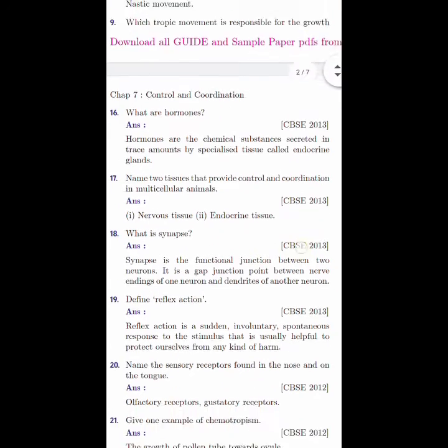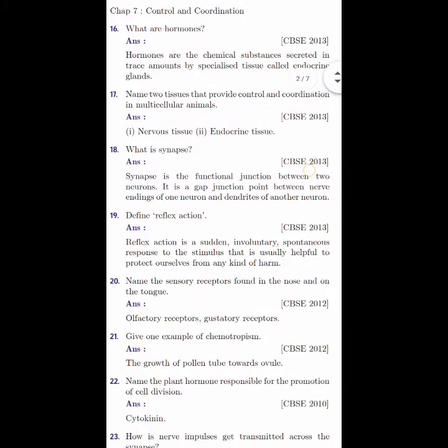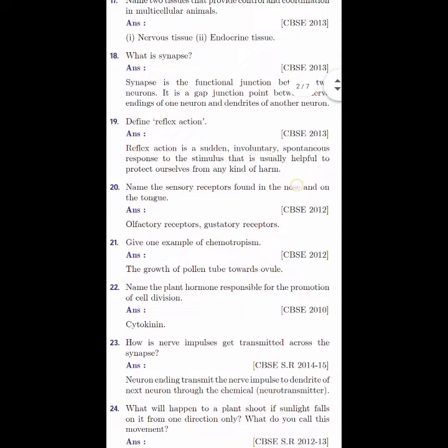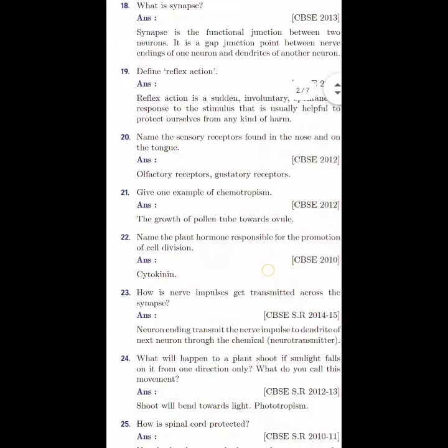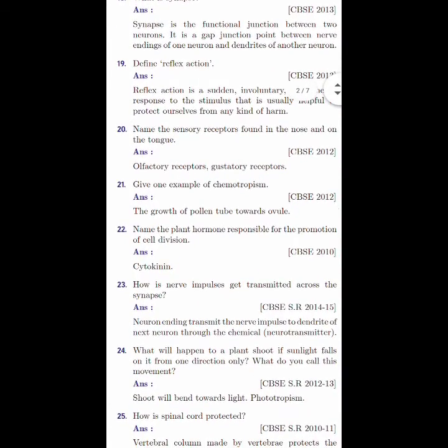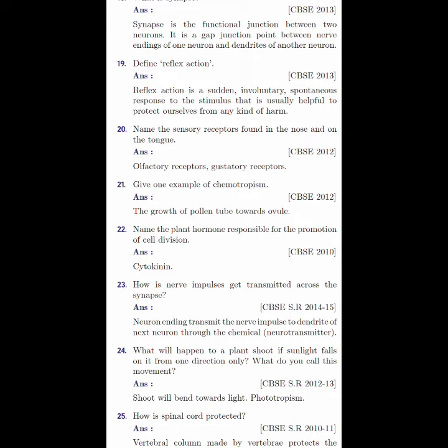Name the sensory receptors found in the nose and the tongue. This 20th question was asked in the year CBSE 2012. Which are those receptors found in nose as well as tongue? Just now you have studied, that is olfactory receptors and gustatory receptors. Give one example of chemotropism. That is the growth of pollen tube towards the ovule.